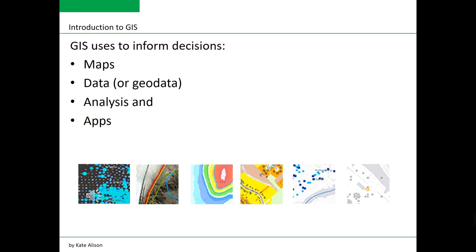Now let's talk about how GIS works. GIS technology applies geographic science with tools for understanding and collaboration. It helps people reach a common goal to gain actionable intelligence from all types of data. For this GIS uses maps, data analysis and apps.